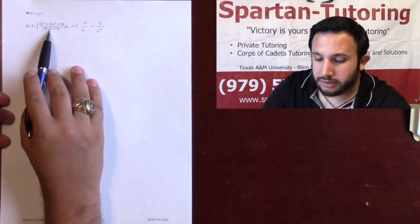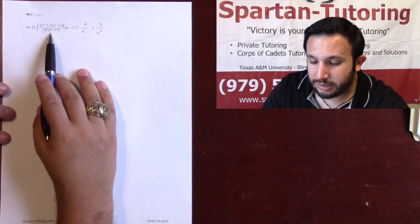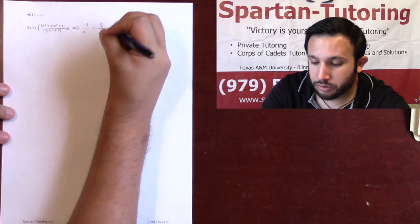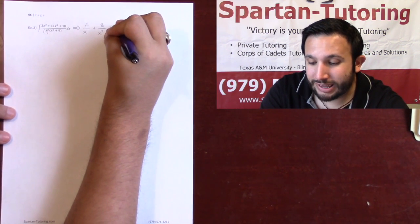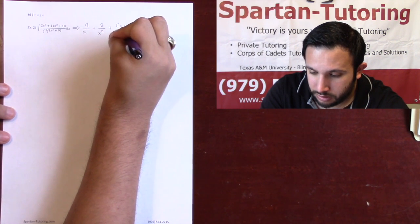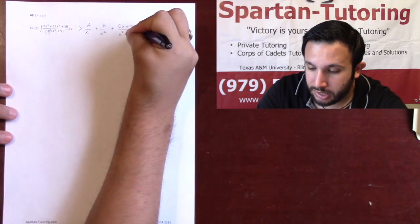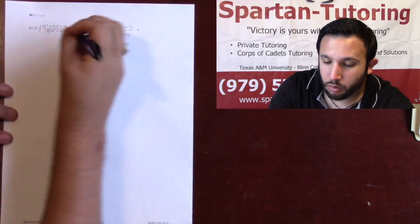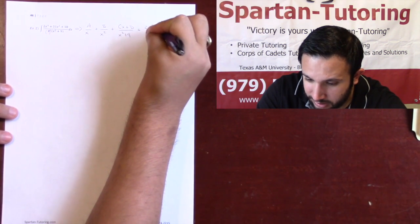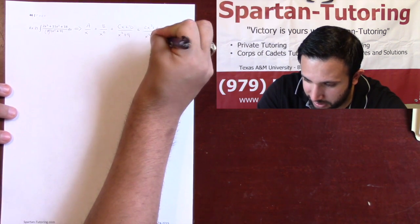Now let's take a look at this next factor in parentheses, x squared plus 9. With x squared plus 9, that's an irreducible quadratic. So I'm going to put an arbitrary linear function Cx plus D over x squared plus 9. This is how you decompose it. Remember, this is equal to that whole big fraction: 2x cubed plus 11x squared plus 18, all over x squared times x squared plus 9.